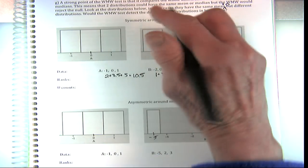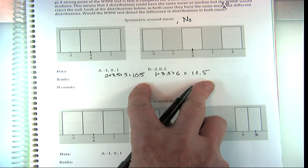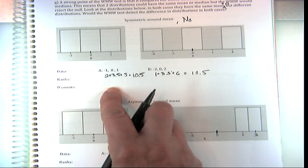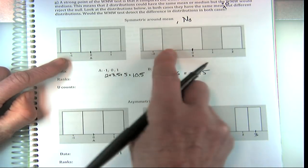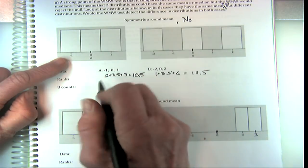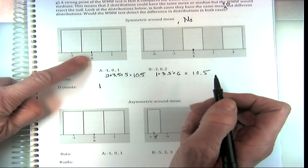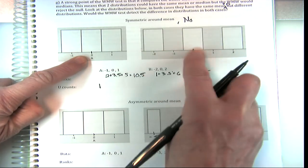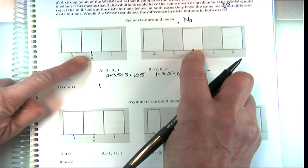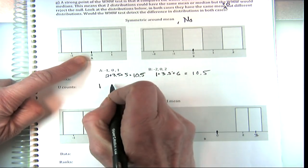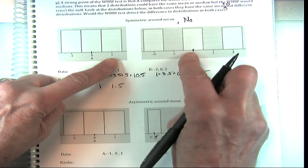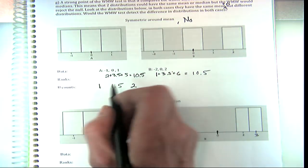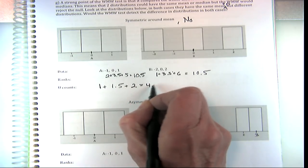So when it's symmetric around the mean, this test does not detect the differences. We can also do the U-counts. For the U-count: negative one outscores just one of the other group. Then zero outscores one and is tied for another — so that's one point plus half a point. And one beats negative two and beats zero — so that gets two. Adding those up gives 4.5.